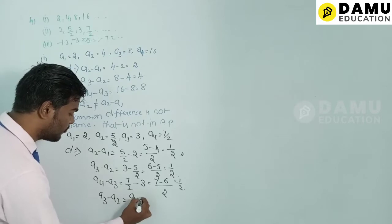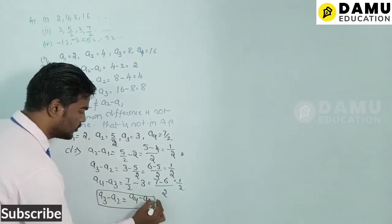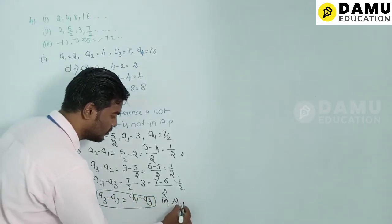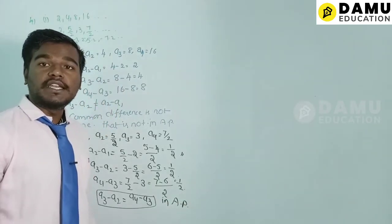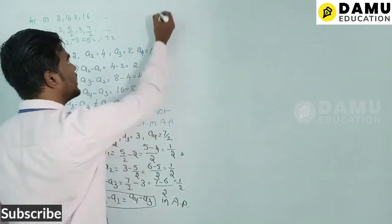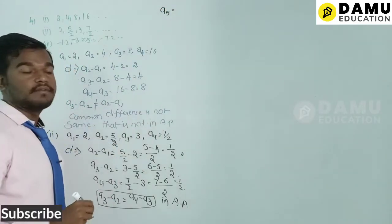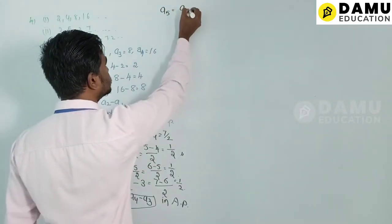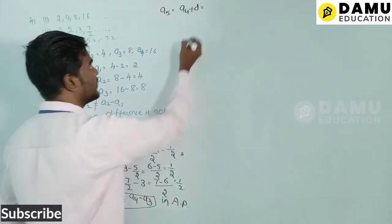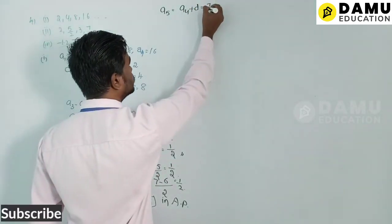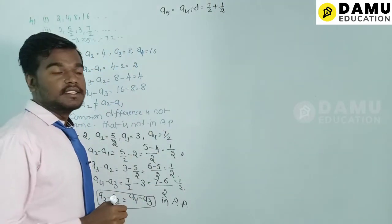Since a3 − a2 = a4 − a3, the series is in AP. Now we find a5: a5 = a4 + d = 7/2 + 1/2.